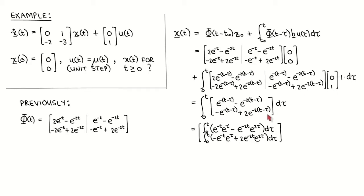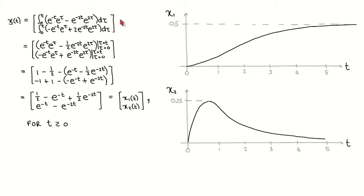We now apply the integral to each element of the vector. At this step we calculate the integral symbolically. After evaluating the integral at the start and end of the interval, tau equal to 0 and tau equal to t, we get this vector written in terms of t, and after combining the constants we get this result.